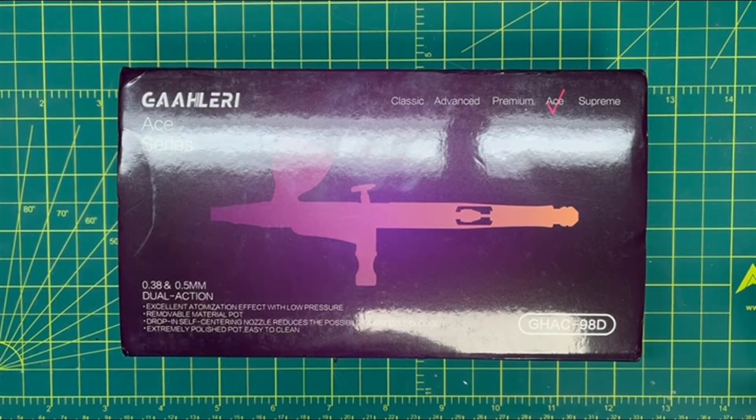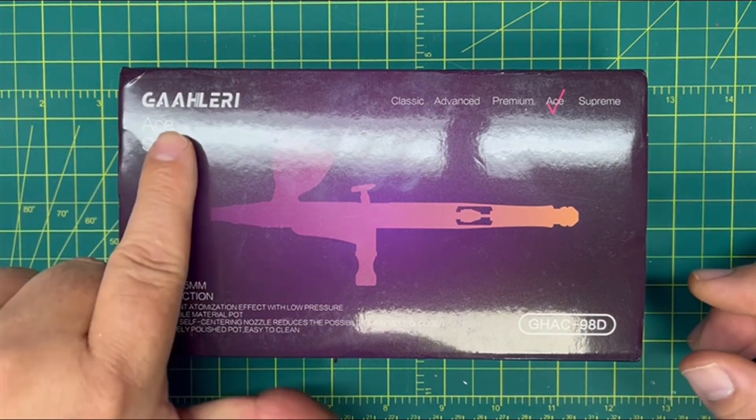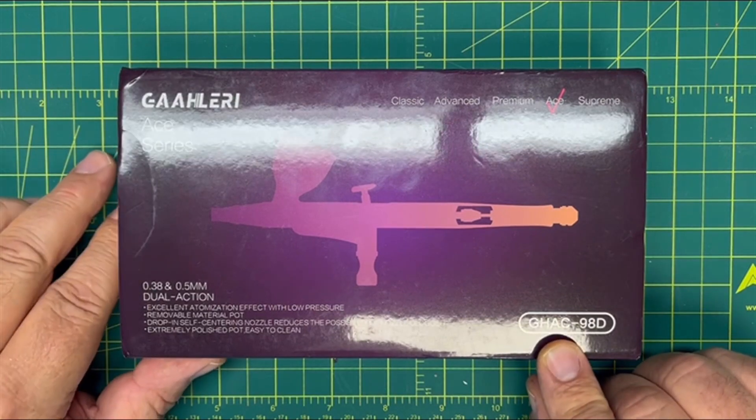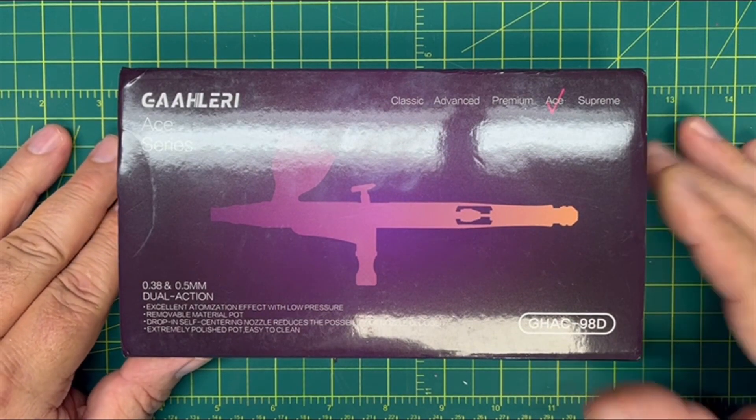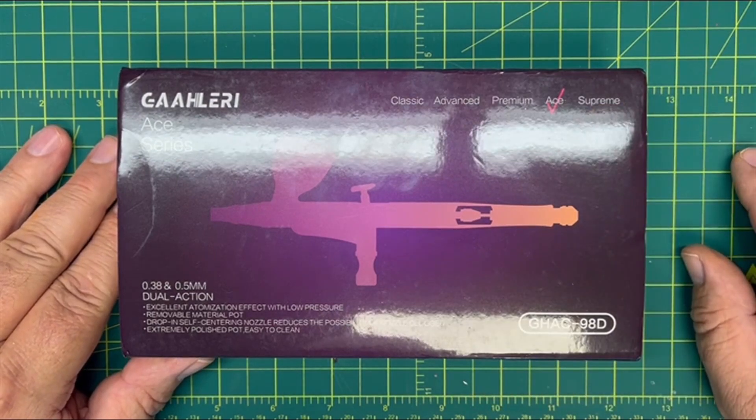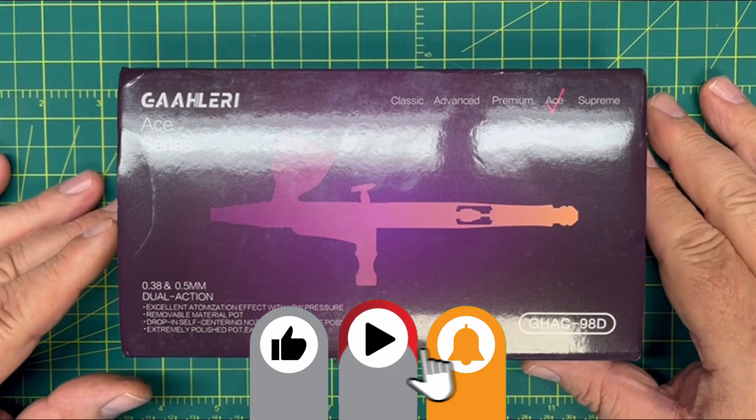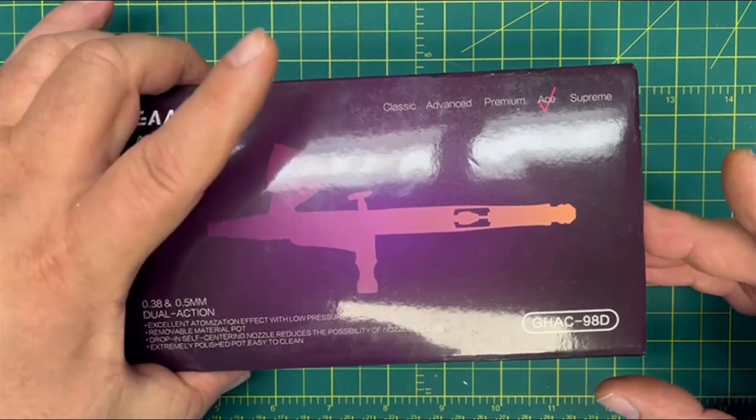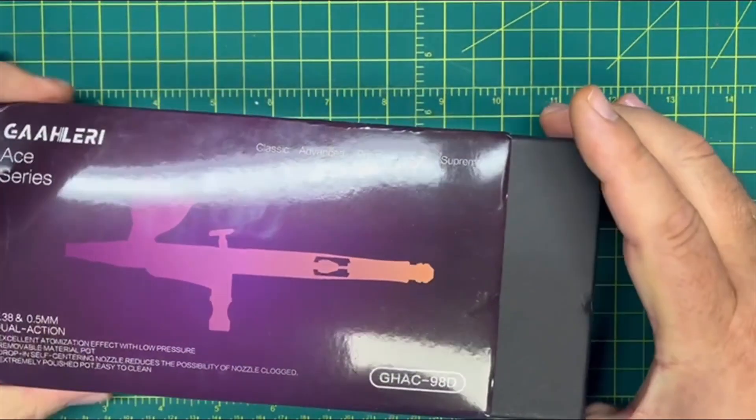Hi everyone, welcome back to Grandpa Mark's Hobbies and an unboxing of a Gallery A Series GHAC-89D dual action ace airbrush. The ace stands for quick self-centering structure, so let's open this up and see what we have.